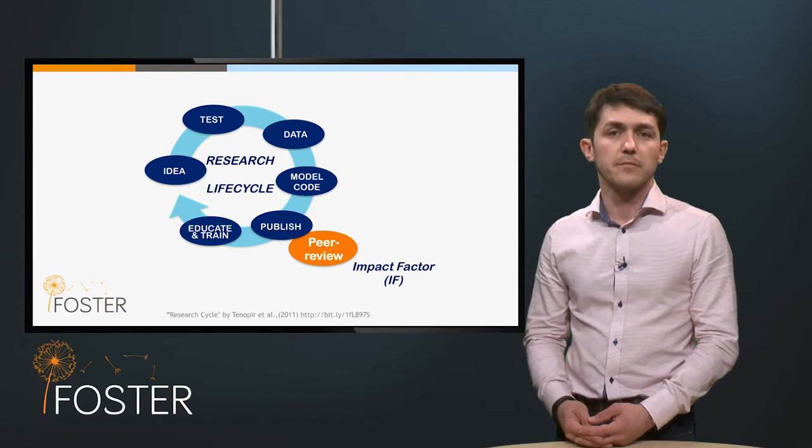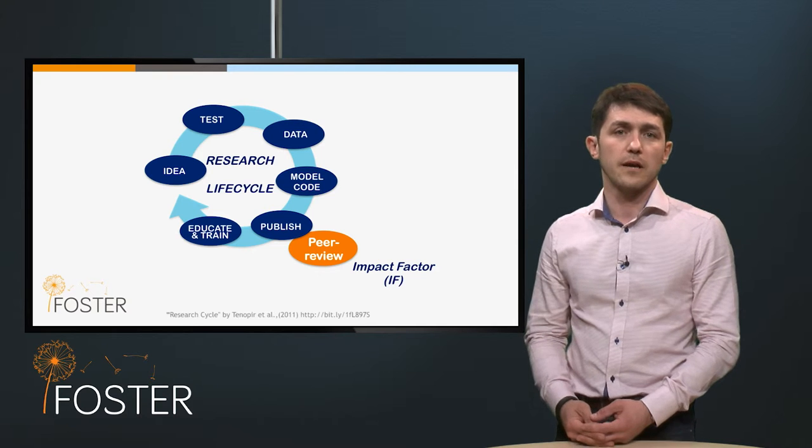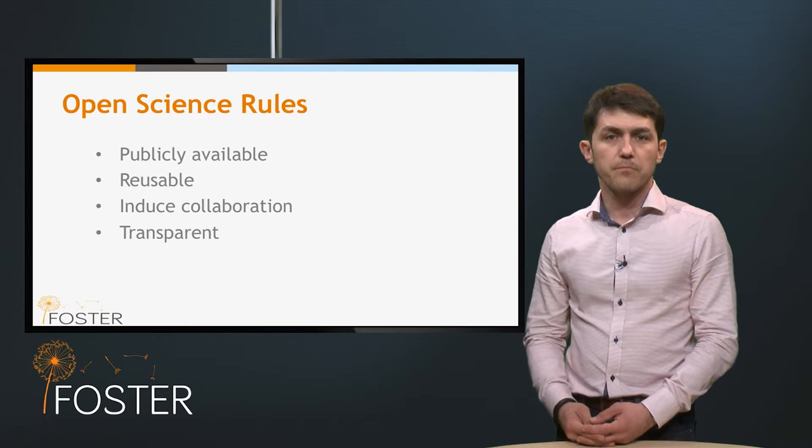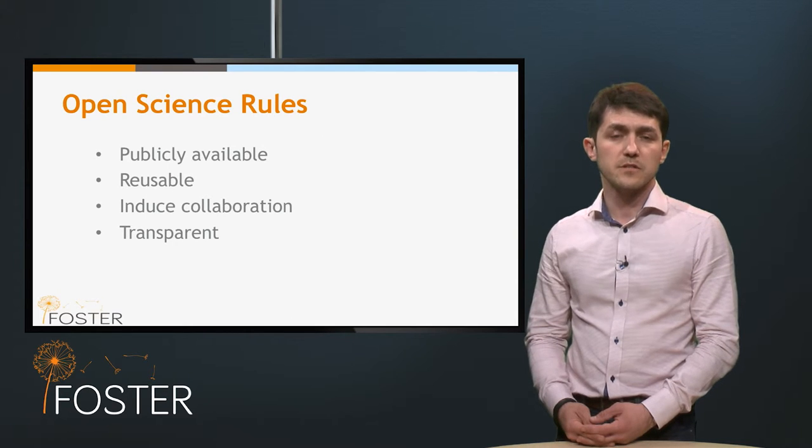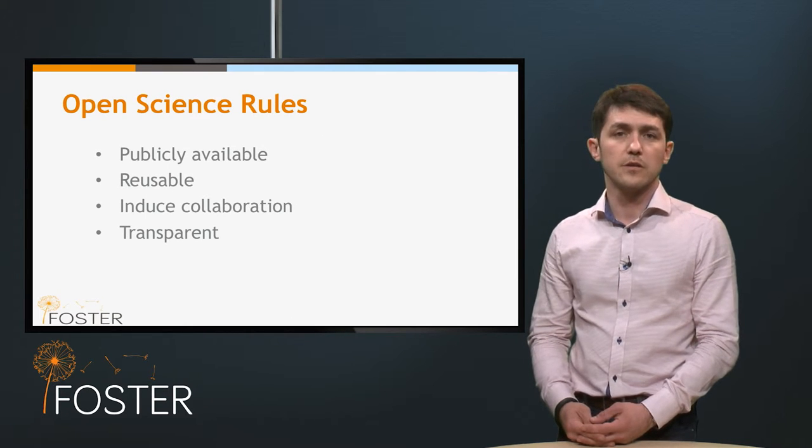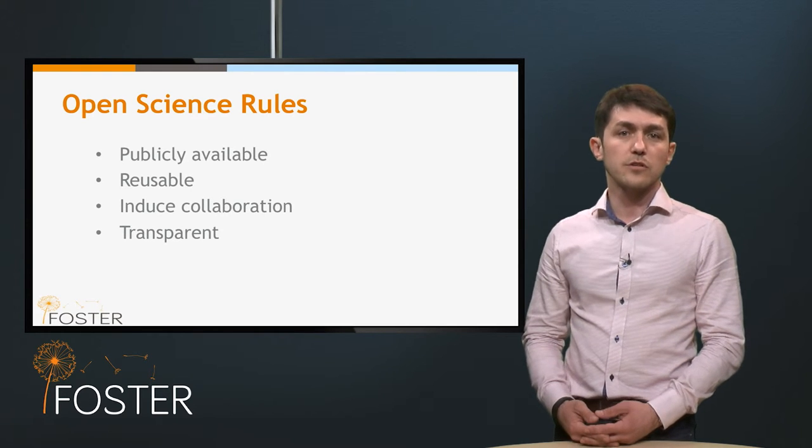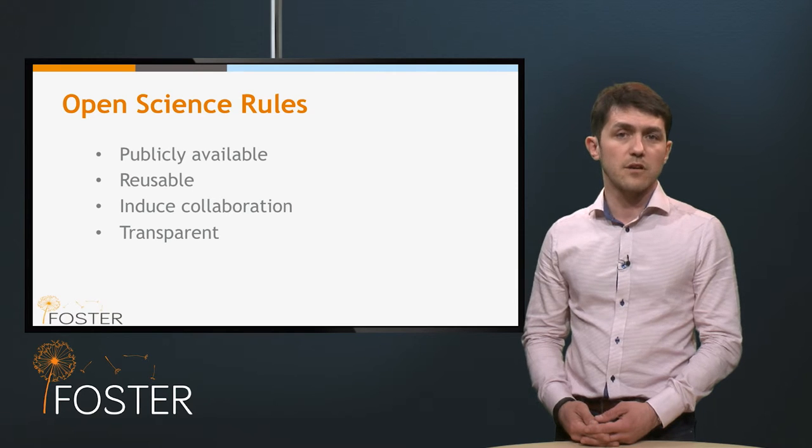The second point to keep in mind is that in order to accomplish open science, there are some basic rules. First, it should be publicly available. It is difficult to benefit unused knowledge hidden behind usernames and passwords and other barriers, or if it does not contain the right metadata to make it discoverable.